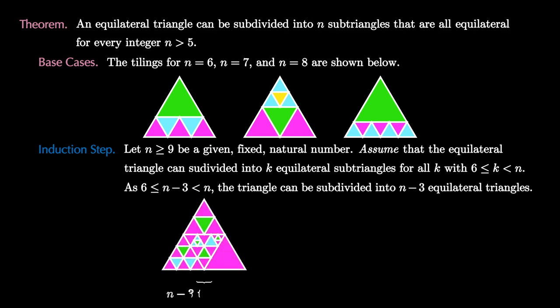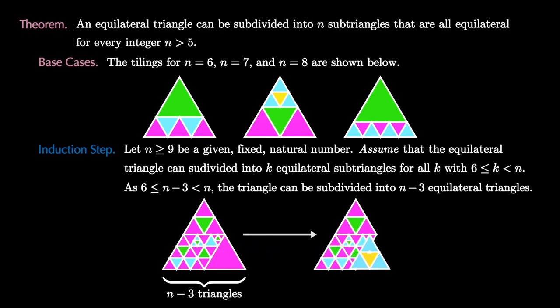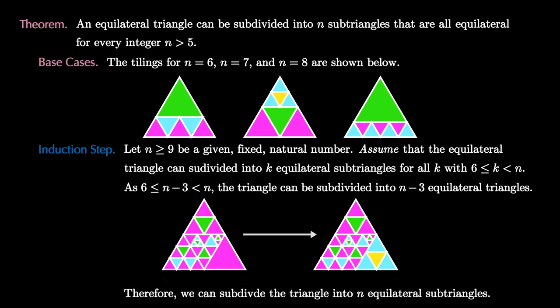Now let's explore the trick. If we have a tiling of the equilateral triangle into n minus 3 triangles, we can then focus on one of those equilateral triangles, and we can replace that single equilateral triangle with a tiling of the equilateral triangle into four equilateral sub-triangles. Since we replaced one triangle with four, we've added three new triangles, and therefore we have a tiling of the equilateral triangle into n equilateral sub-triangles.